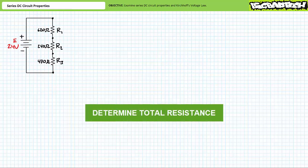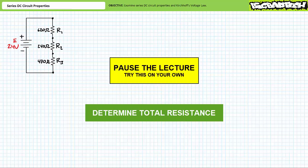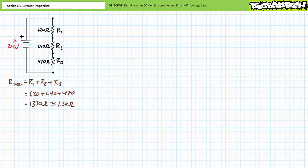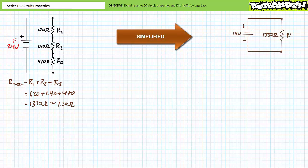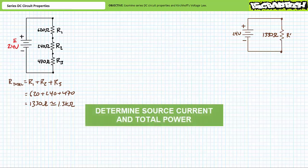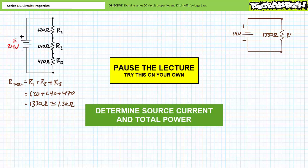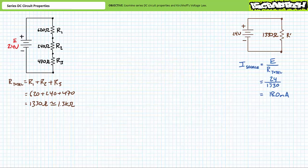First, see if you can determine the total resistance seen by the source. Series resistances add up: 620 plus 240 plus 470 equals 1330 ohms, or roughly 1.3 kilohms. This implies the 24-volt source would be none the wiser if the series combination of three resistors was swapped out and a single 1330 ohm resistor took their place. Using this simplification: source current is supply voltage over total resistance, yielding roughly 18 milliamps. Power is voltage times current, yielding roughly 433.1 milliwatts of power.